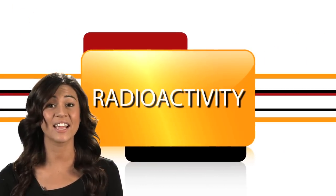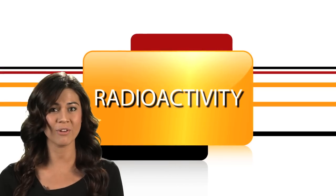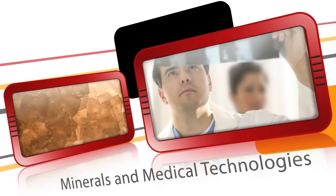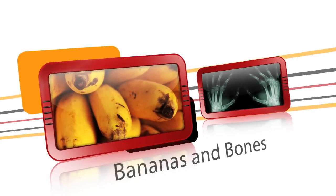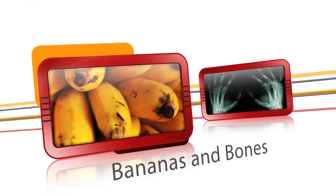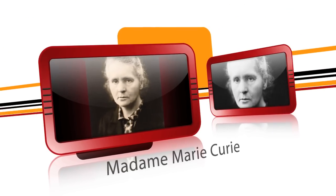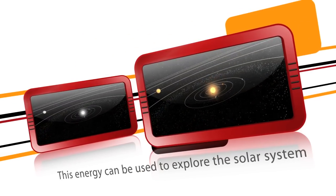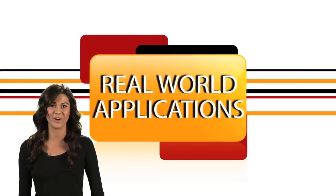Radioactivity. There are lots of things that can give off small or large amounts of energy and particles that we refer to as being radioactive, including minerals that come out of the earth and helpful medical technologies. Even bananas and your own bones contain substances that are slightly radioactive. In 1898, Madame Marie Curie first used the word radioactivity to describe the ability of certain elements to give off invisible energy. But did you know that this type of energy can be used to explore the solar system? Find out how next on Real World.